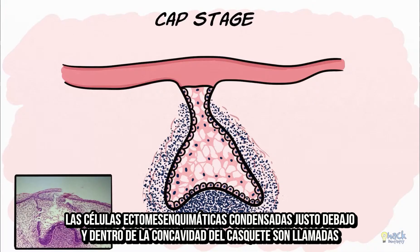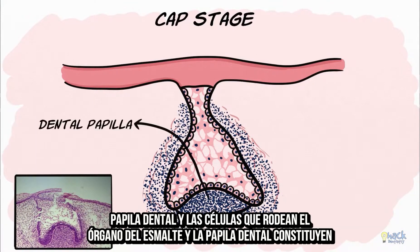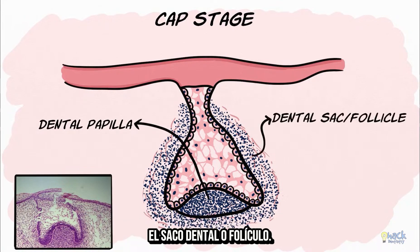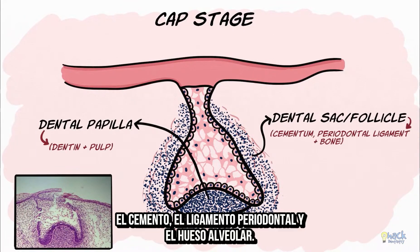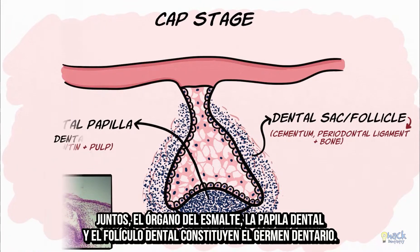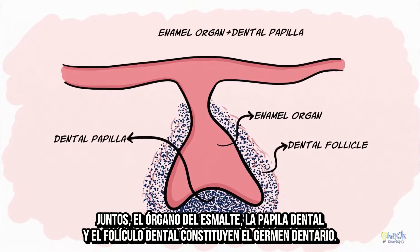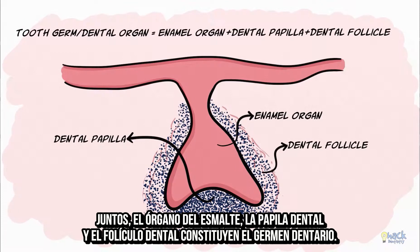The ectomesenchyme cells condensed just below and within the concavity of the cap are called the dental papilla, and the cells surrounding the enamel organ and the dental papilla constitute the dental sac or dental follicle. The dental papilla would eventually form the dentine and the pulp, and the dental follicle would form the cementum, periodontal ligament, and the alveolar bone. Together, the enamel organ, the dental papilla, and the dental follicle constitute the tooth germ or dental organ.